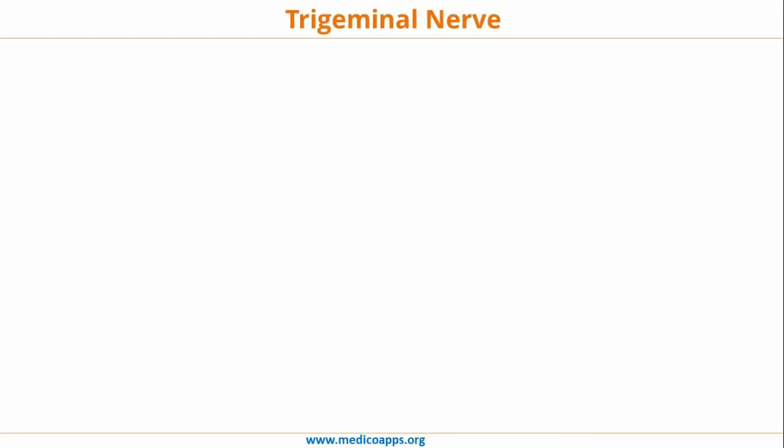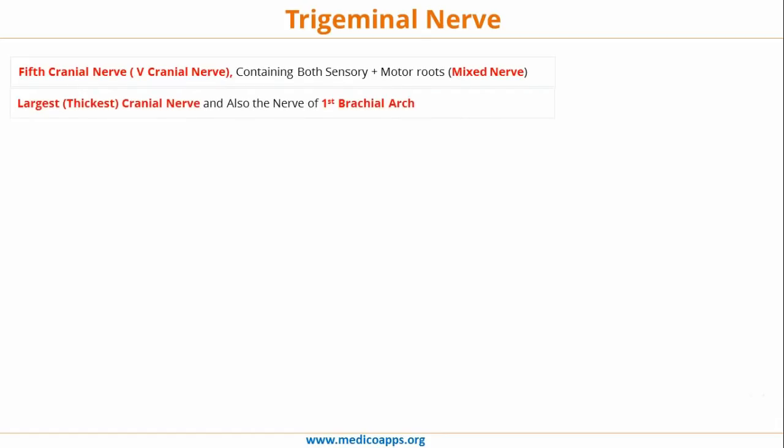The most important points about the trigeminal nerve system: the fifth cranial nerve has both sensory and motor roots, hence it is called a mixed nerve. It is also the largest and thickest cranial nerve, and it is the nerve of the first branchial arch. The mandibular branch of the trigeminal nerve supplies all the muscles derived from the first branchial arch, notably the muscles of mastication.